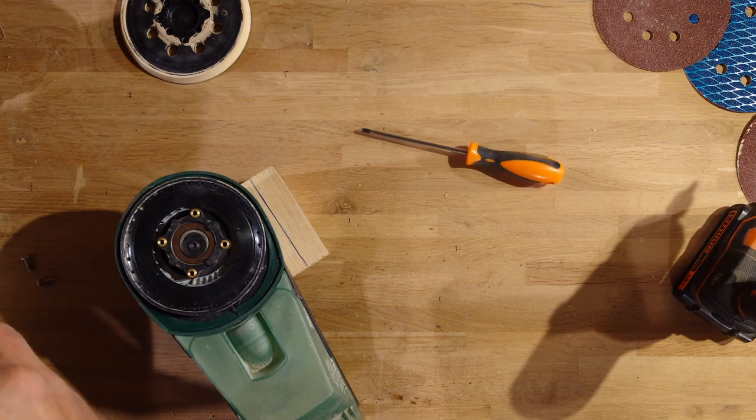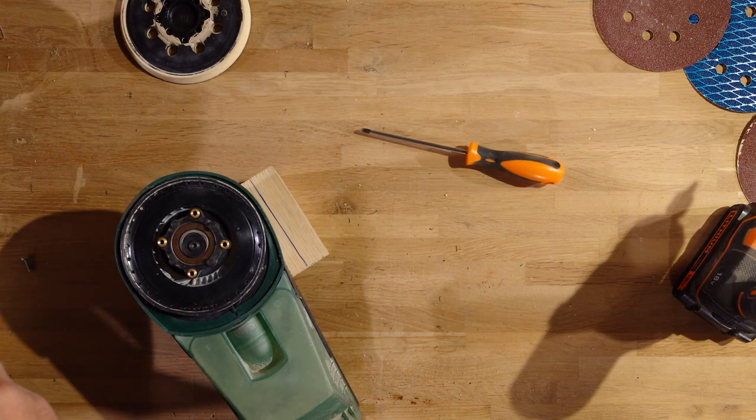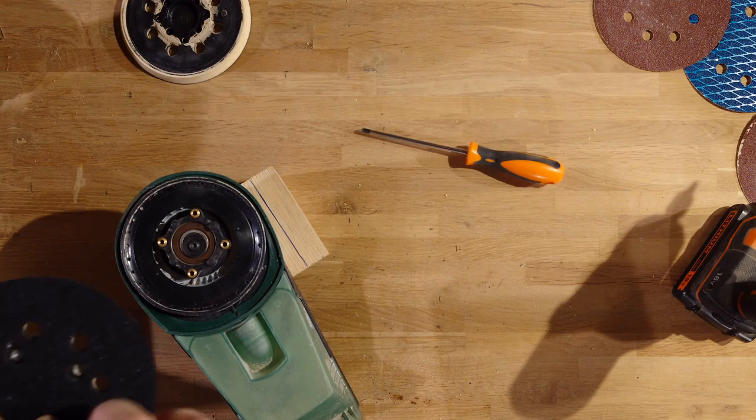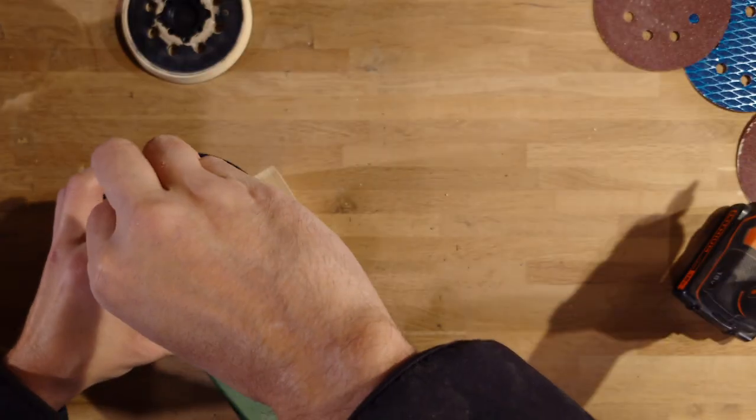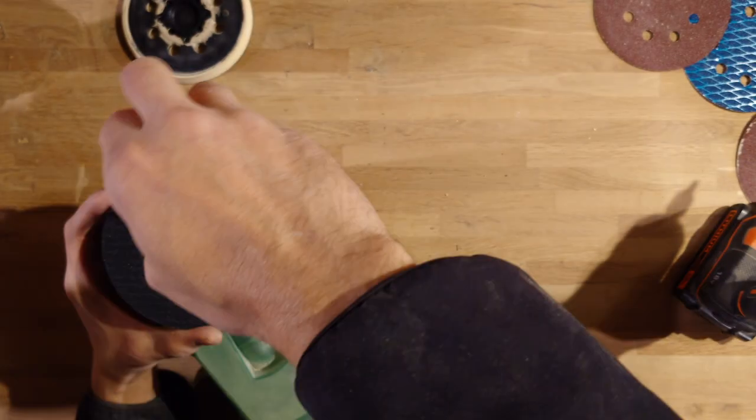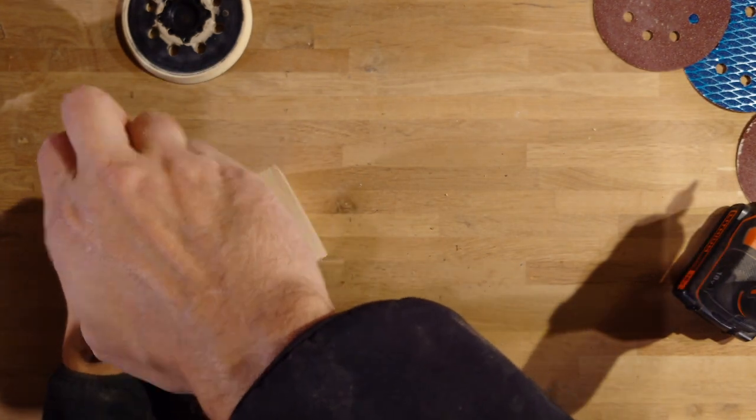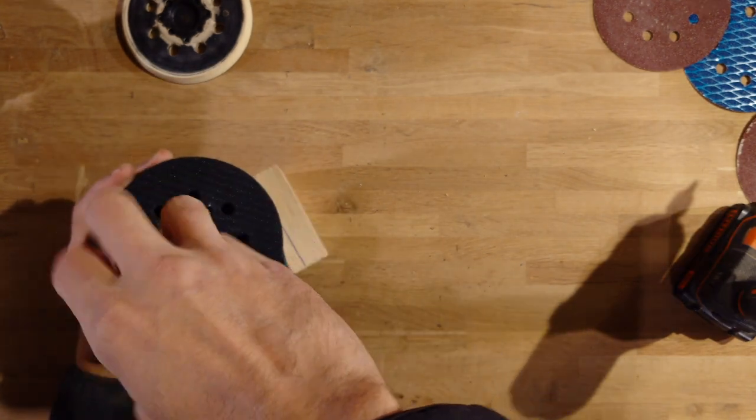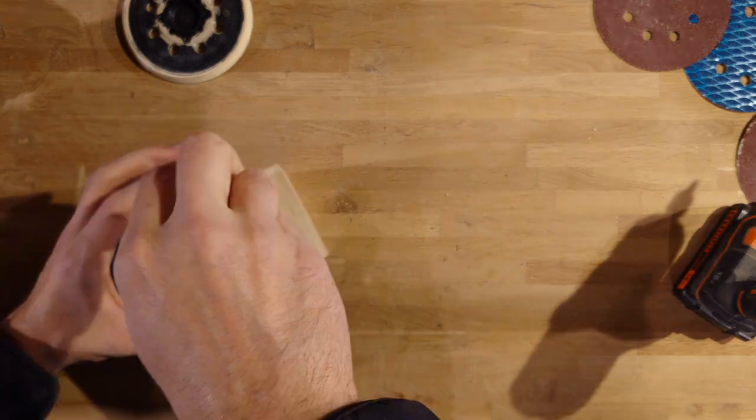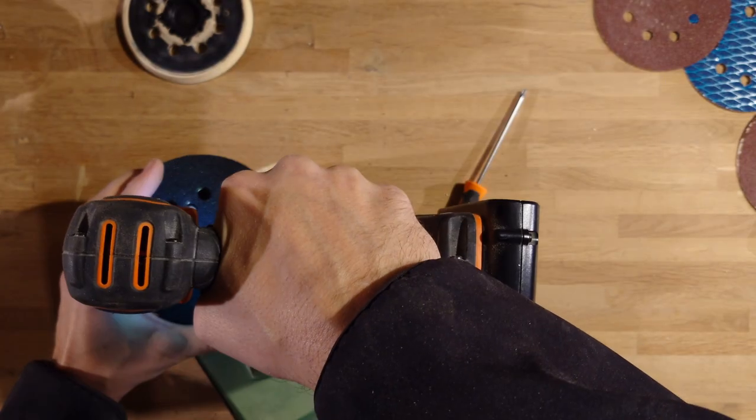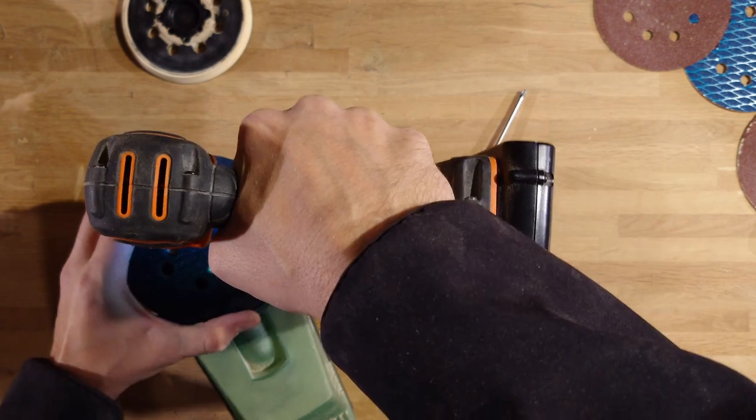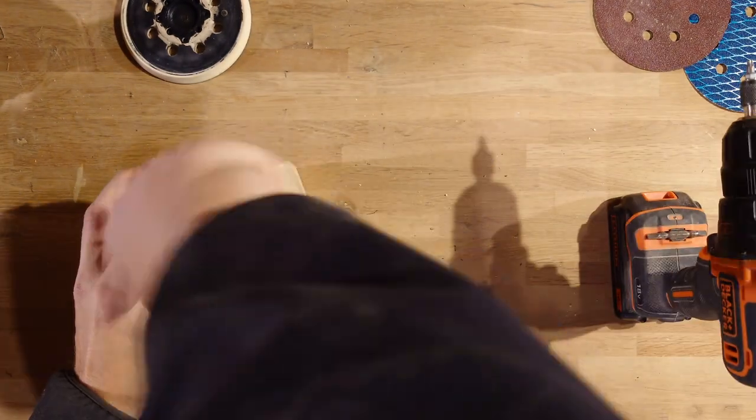And now let's put on the new backing pad using the same old four screws as we used earlier. I just get it started with the screwdriver before I speed it up by using a drill. But do the last bit of tightening by hand, just to be safe.